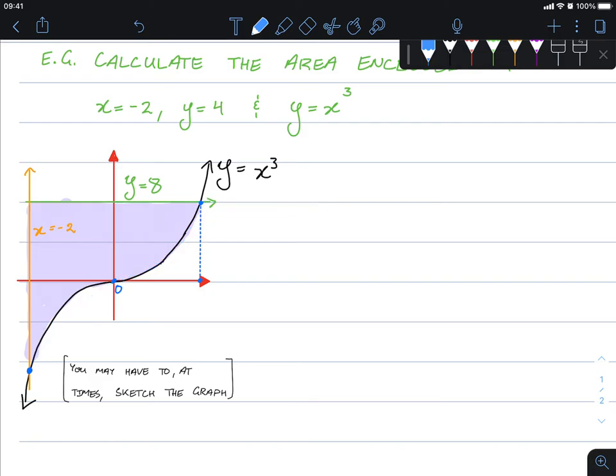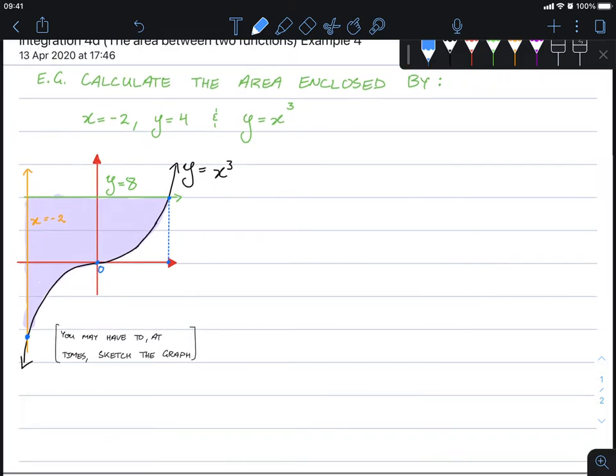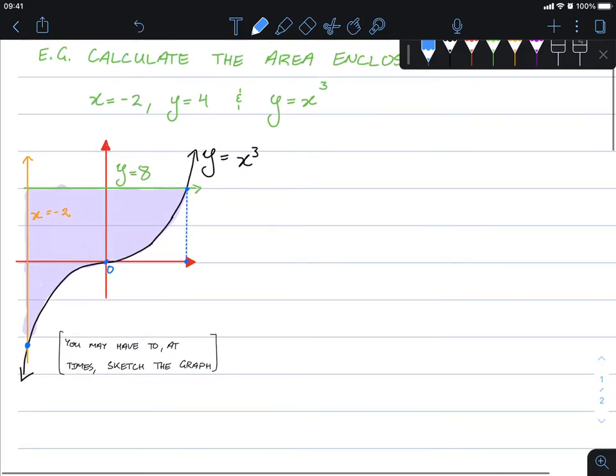We actually already know the bottom interval, so it's going from negative 2 up until some point here. We need to figure out where these two points meet. Well, we can figure that out rather simply.